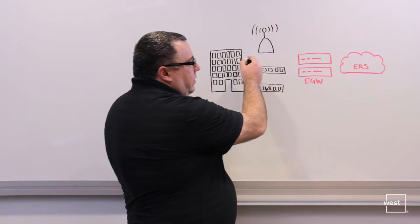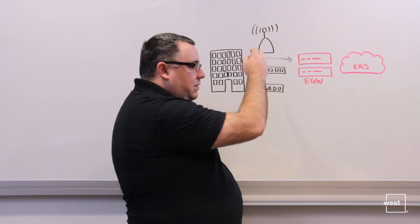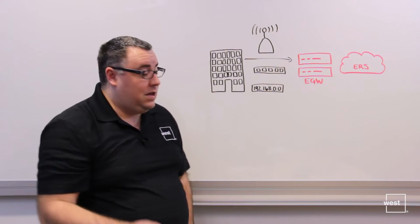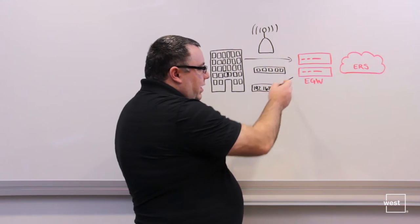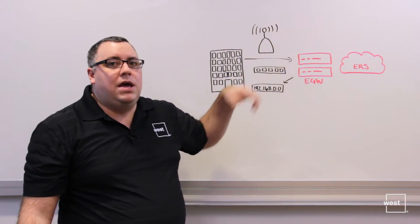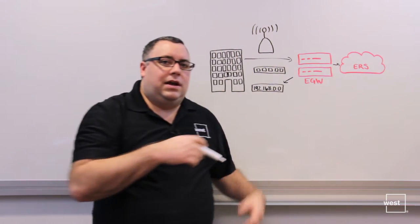As the 9-1-1 call is placed, it hits the emergency gateway appliance which has a mapping of these network elements in its location information service database or LIS. It's going to identify that the caller's connecting from either this IP subnet, switch, or access point, identify the location data, and then route the call to the ERS to get out to the answering point.